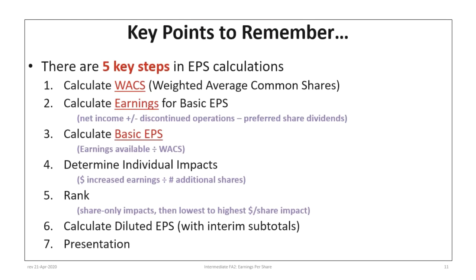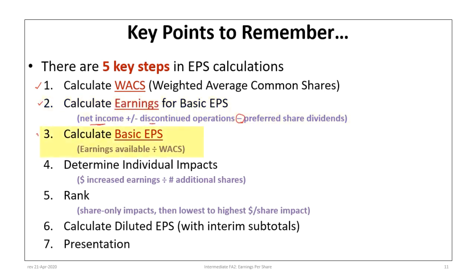There are five key steps in EPS calculations. First, calculate the weighted average number of common shares — a detailed calculation, so make sure you're comfortable with it. Second, calculate earnings for basic EPS: start with net income, add back any losses from discontinued operations (or subtract gains), then subtract preferred share dividends. For cumulative preferred shares, deduct current year dividends only; for non-cumulative where no dividend is declared, do not include those dividends.